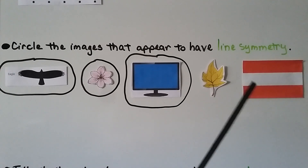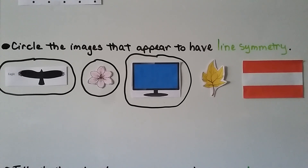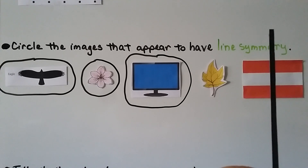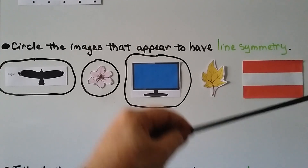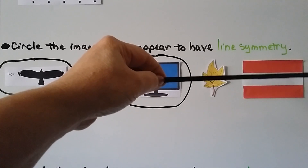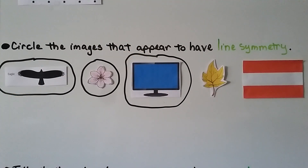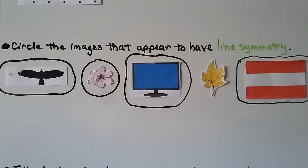The Austrian flag: drawing a vertical line would make a mirror image on both sides, and it would also work horizontally. So the Austrian flag does appear to have line symmetry. If a line divides a shape in half to make a mirror image, that shape has line symmetry.